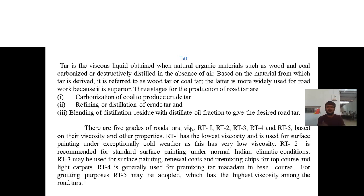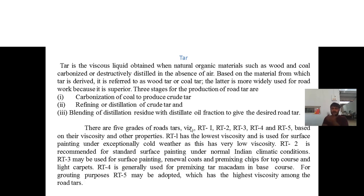The second type of bituminous material is tar. Tar is a viscous liquid obtained when natural organic materials such as wood and coal are carbonized or destructively distilled in the absence of air. Based on the source material, it is referred to as wood tar or coal tar. Coal tar is more widely used for road work. The three stages of production of road tar are: carbonization of coal to produce crude tar; refining or distillation of the crude tar; and blending of the distillation residue with distillate oil fractions to give the desired road tar.